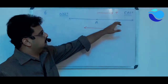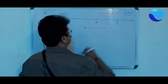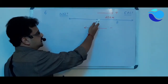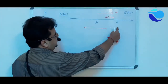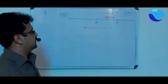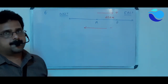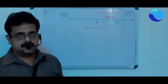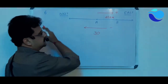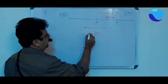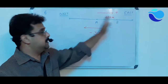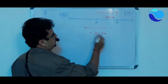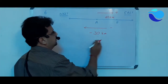She travels 20 kilometres from point A to point B. Now, since westward travel is negative, the 30 kilometres she travels from B towards the west is represented as minus 30. So we write minus 30 for that distance.